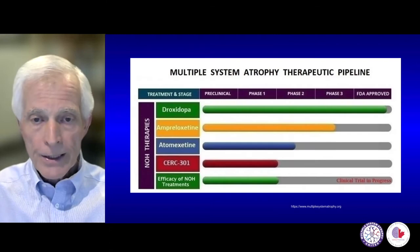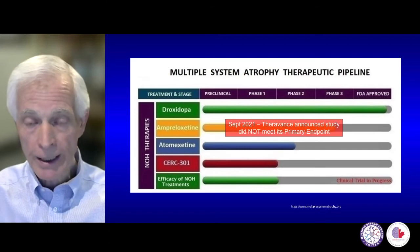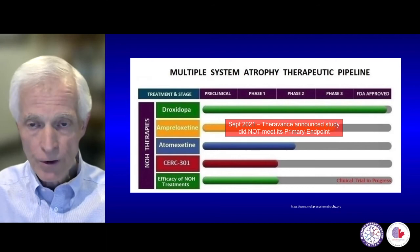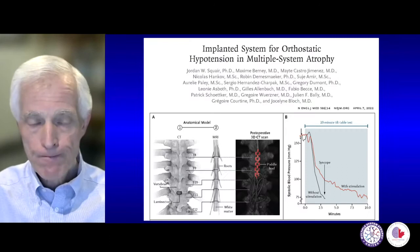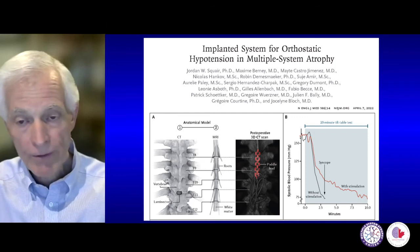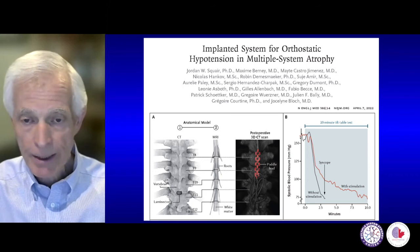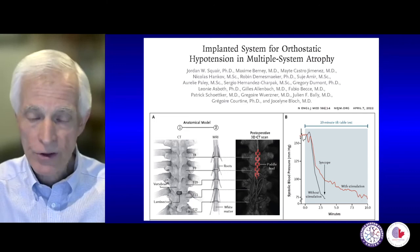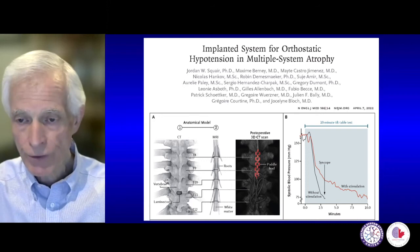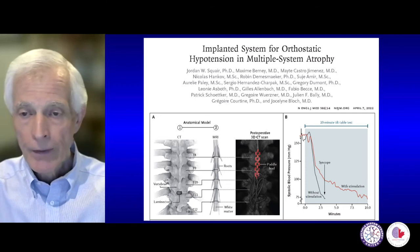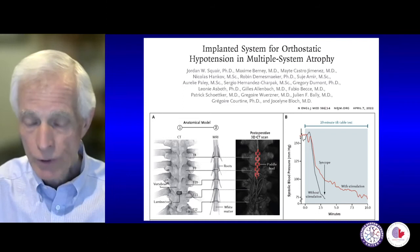Among treatments in the pipeline, ampreloxetine looked very promising but TheraVance announced last year it would not be pursued further as it didn't reach the primary endpoint. An interesting treatment just reported in the New England Journal is an implant therapy — a spinal cord stimulator used in a single patient with MSA that was effective in preventing quite severe orthostatic fainting. This was also combined with extensive rehabilitation and physiotherapy to improve the patient's ability to stand and walk, so the effect may not have been exclusively due to the stimulator.